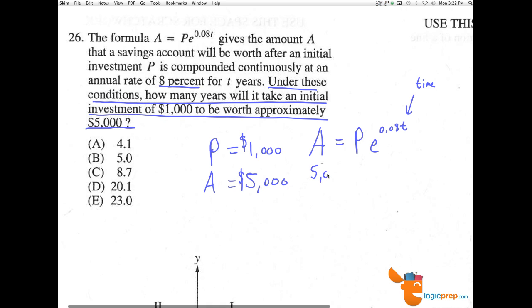So we have $5,000 is what we're trying to find out how long it's going to take to have in our account. We start with $1,000, and we have that times E to the 0.08T.